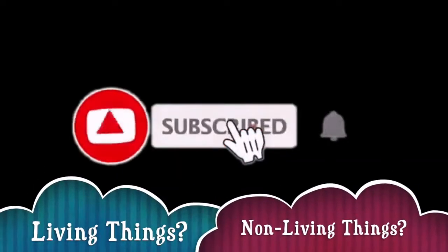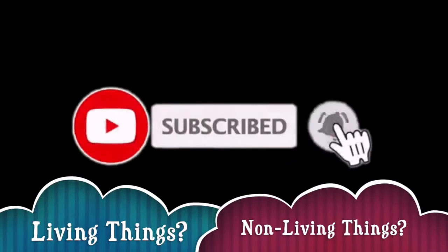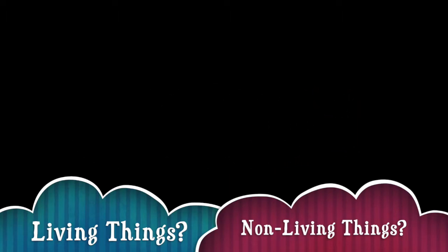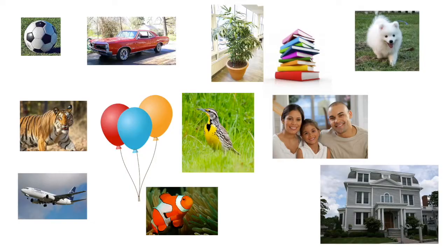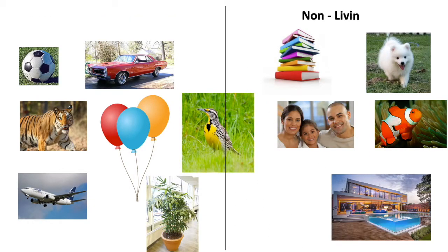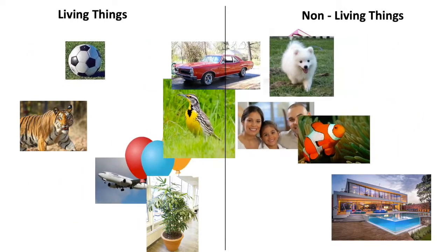We see a lot of things around us. Out of that, how do we identify things as living or non-living? Let's take some examples. Here are some random pictures. Can we classify these into living and non-living things? So here's the answer. It's pretty easy, right?